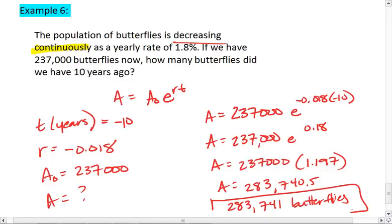And looking at that number, that makes sense. 10 years ago, we should have more butterflies than we do now if the butterfly population is decreasing.